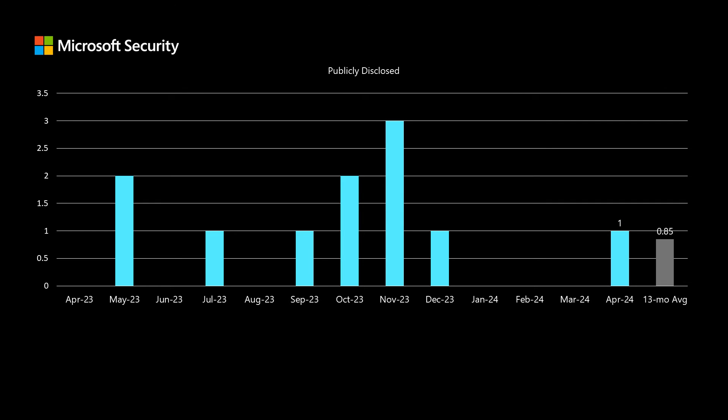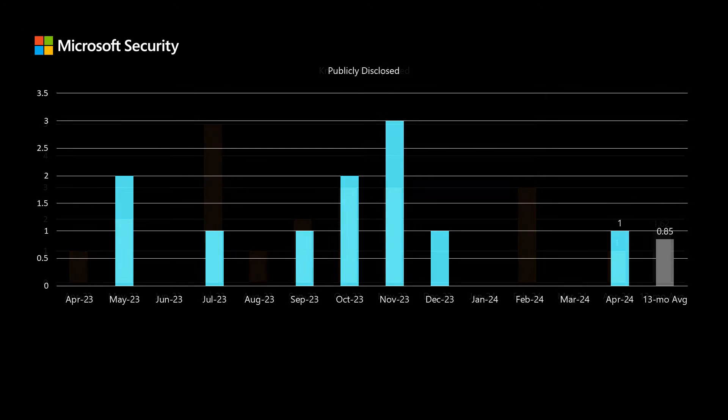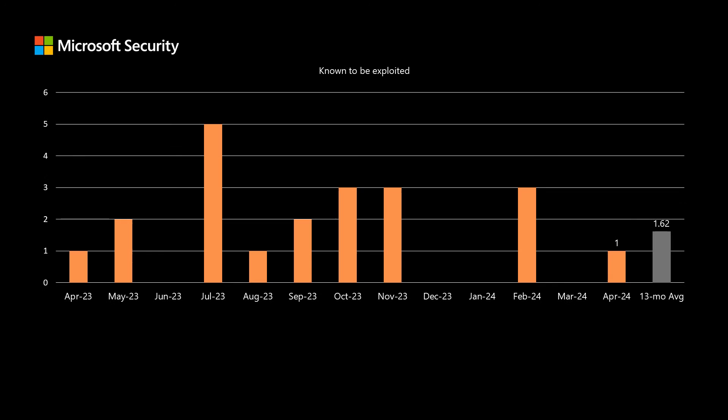There was one vulnerability that was publicly disclosed in today's set, and we've been averaging just under one. There's also one vulnerability that was known to be exploited at the time of release, and we've been averaging right around 1.6 over the past 13 months.